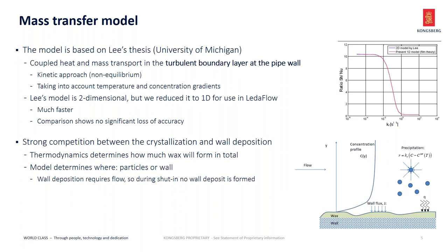The original model is two-dimensional, but it has been reduced to one dimension for use in LedaFlow, which makes it much faster. The comparisons we've done — one of which is shown in the top right corner — show that there's no significant loss of accuracy. So there's not really any trade-off that has been made there.